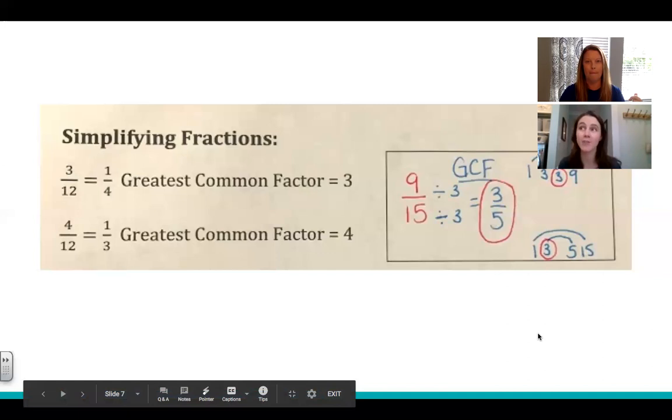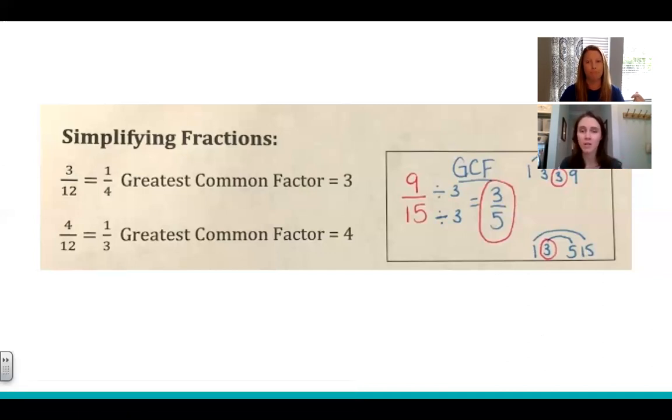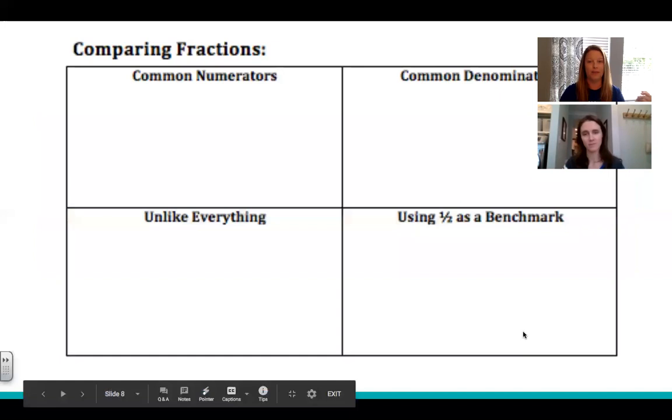If we have nine-fifteenths, again, we list out the factors for both. We see that the GCF or greatest common factor is three. So we divide by three in the top and in the bottom to get three-fifths. The only time you stop with simplifying is when both of your numbers can't be divided by anything else. When they don't have another greatest common factor. And then remember if it's an even number, then it can still be divisible by two. So check that as well.